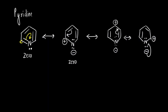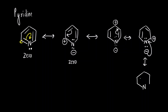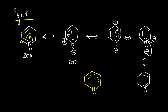The last step is nitrogen giving back its lone pair, like this. This is the final resonance structure: N, pi bond, pi bond, and pi bond, with nitrogen now having one lone pair. Now if we want to draw the resonance hybrid, first draw the sigma bonds and the lone pair — this one lone pair is not involved in resonance. The remaining structure is like benzene: all the pi electrons involved are shown by a dotted circle. So this was pyridine.